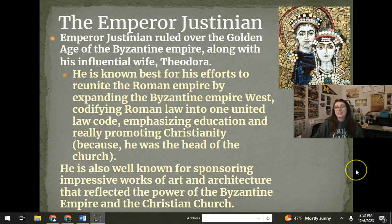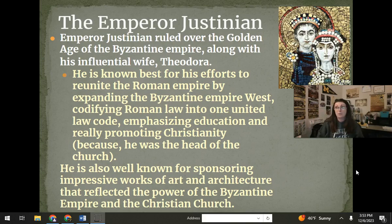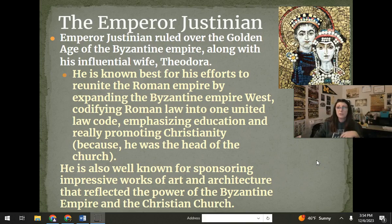We can't talk about the Byzantine Empire without talking about Emperor Justinian, who really is the highlight of the Byzantine Empire. He is known for so many things, not least his marriage to his wife Theodora, who came from very humble backgrounds and rose from rags to riches to be the emperor's wife. She was super intelligent and was really influential on his policies for how to treat women and the poor. He's best known for basically trying to put the Roman Empire back together under the Byzantine Empire, unifying it under one law code called the Justinian Code — taking laws from all over the empire and putting them into one concise code without inconsistencies. And he really promoted Christianity within the Byzantine Empire, because as head of the church, if people support the church, they also support him.